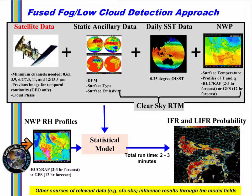These GOES-R IFR probability products use information from the satellite and model data and other ancillary data to diagnose the likelihood of low ceilings and/or reduced visibilities. Model data used are chiefly low-level moisture profiles. When saturation or near saturation is present in the Rapid Refresh model, IFR probabilities are greater. The statistically generated fused approach mitigates weaknesses in the individual predictors. For instance, satellite measurements are not very useful for diagnosing fog and low clouds when multiple cloud layers are present. Model fields tend to struggle when depicting small-scale fog events like valley fogs that occur at sub-grid scale resolutions.